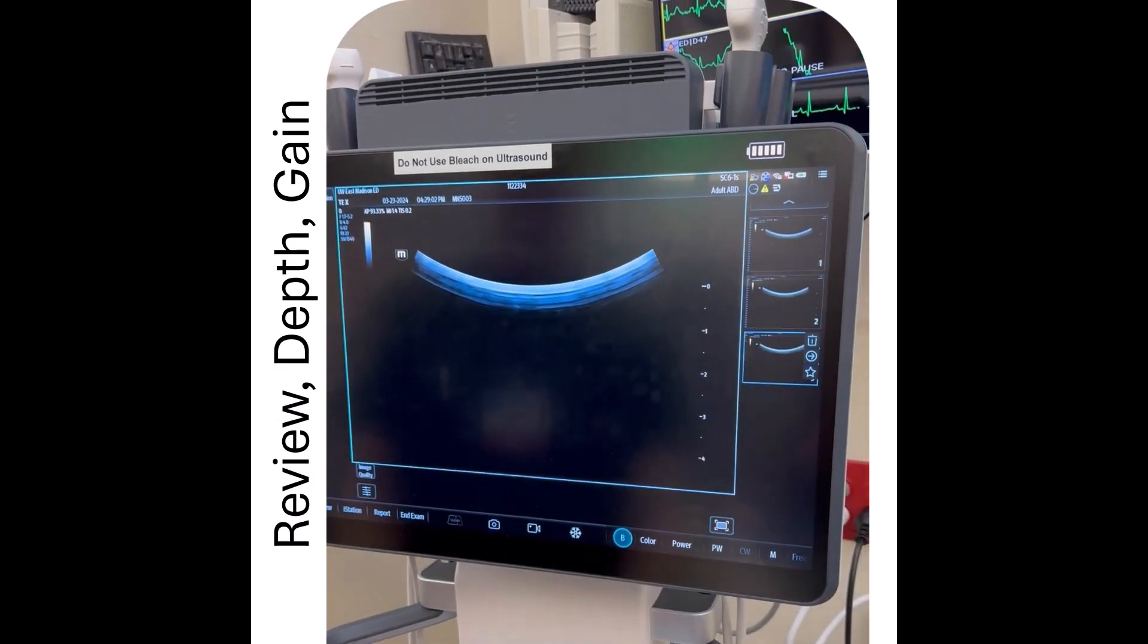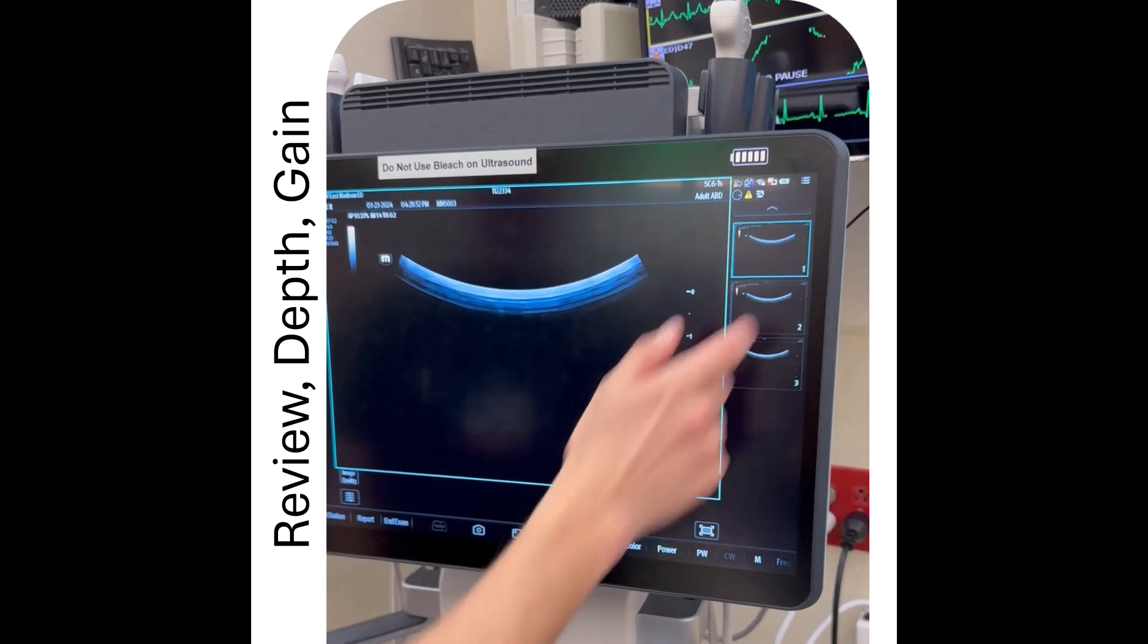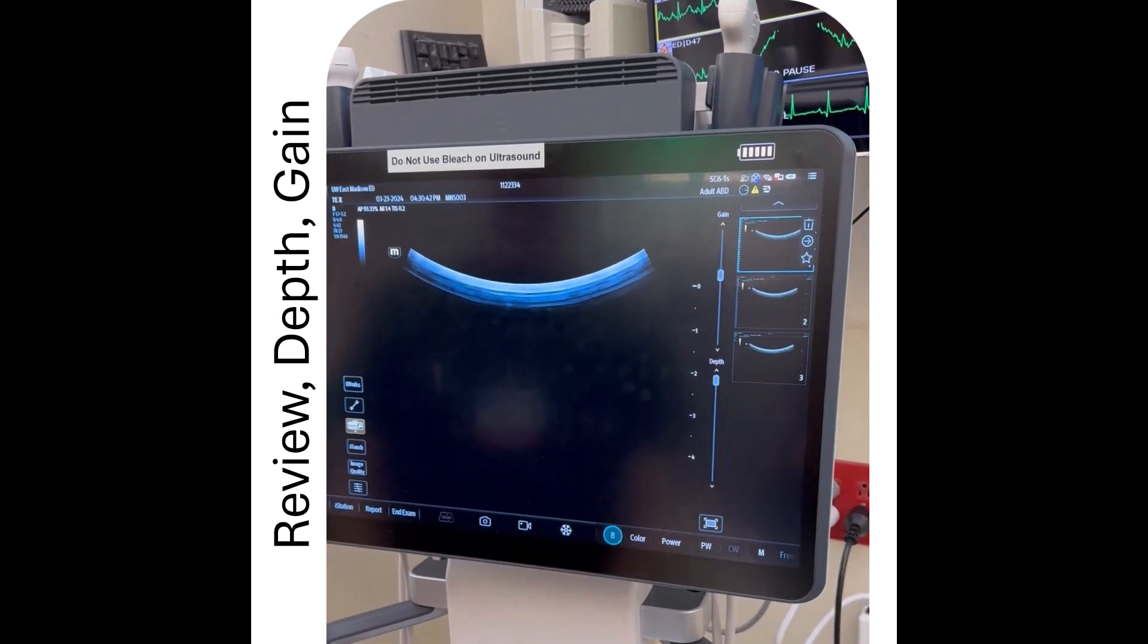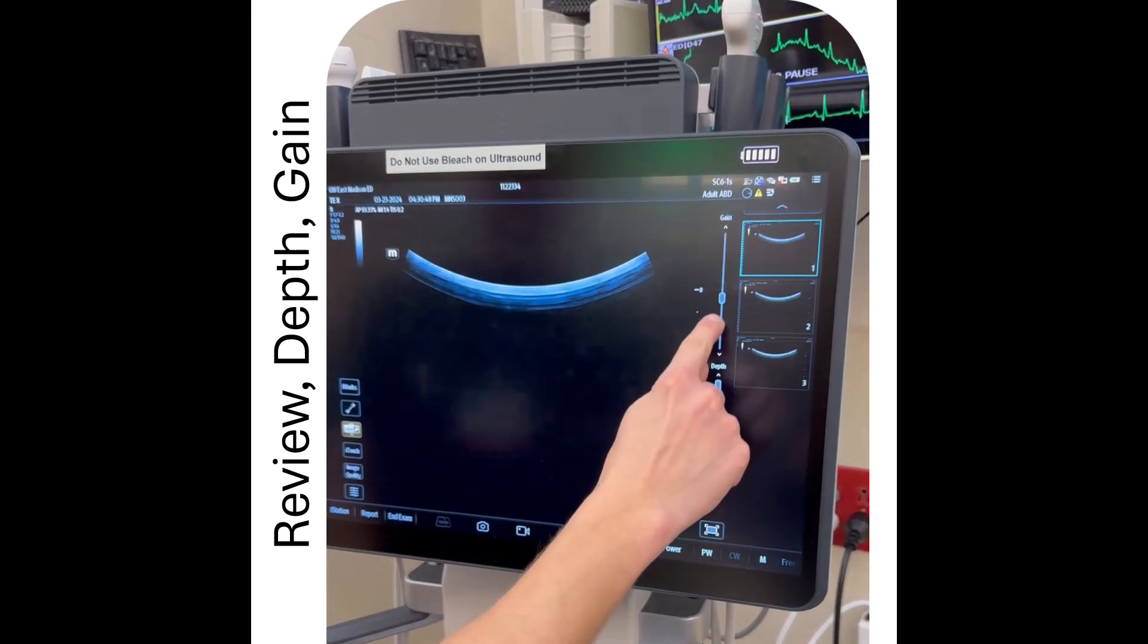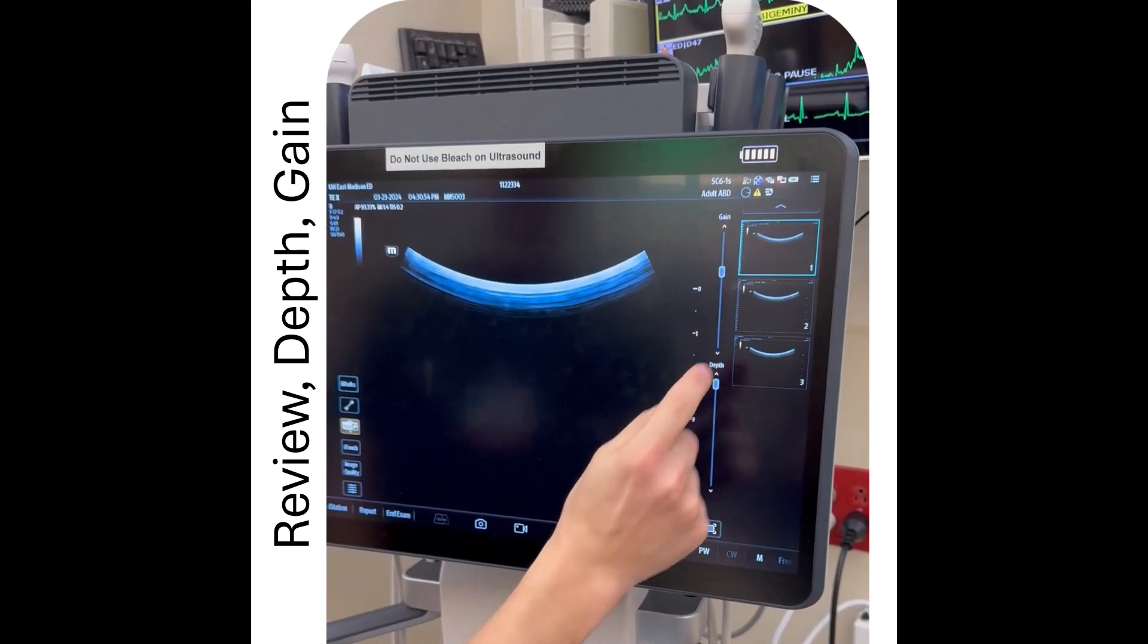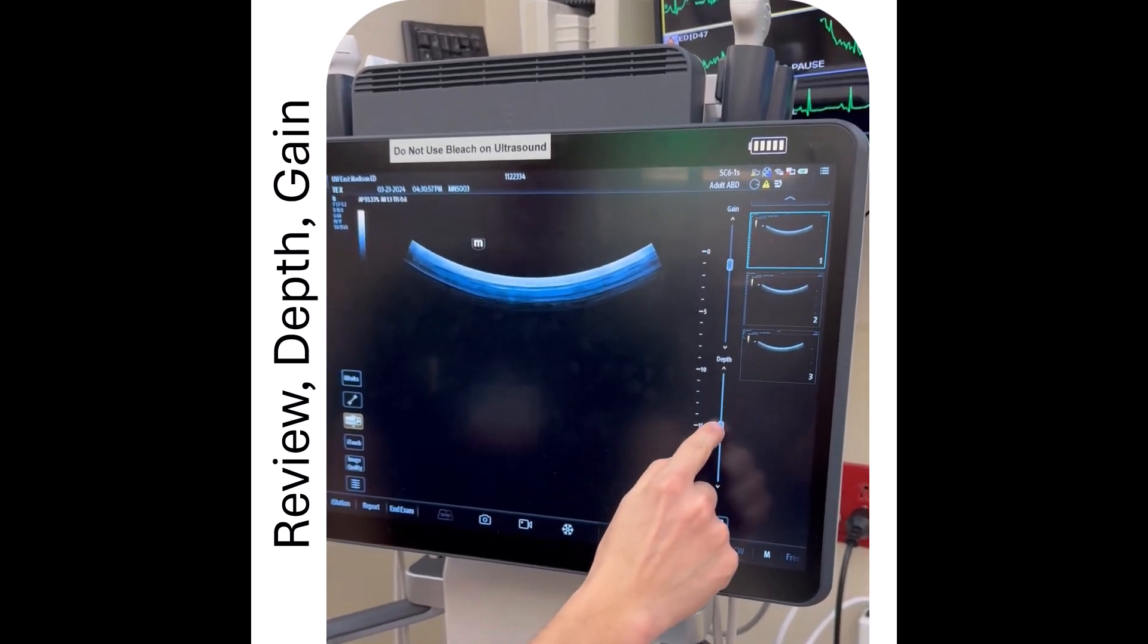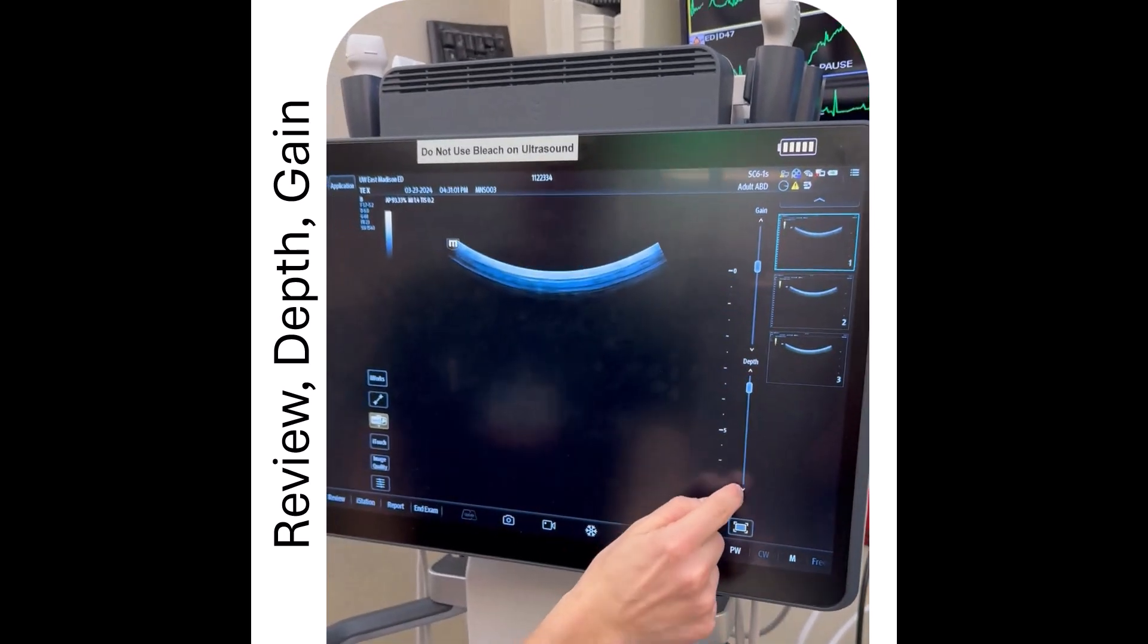Next, we'll talk about how to review images. So if you did want to review an image, you'll simply click on the image on the right side of the screen here. To get back home, you're going to press the B button there. To adjust the gain, you're going to click on the little bar and drag it either up or down, depending on how you want to adjust your gain. You can also click on the arrows. And same goes for the depth. You can either drag and drop, or you can click on the arrows to adjust your depth.